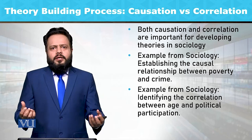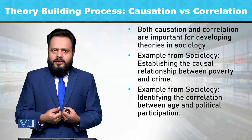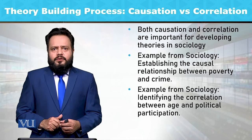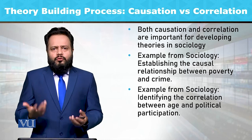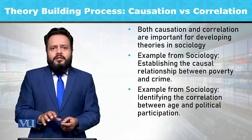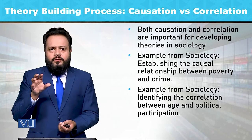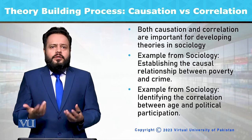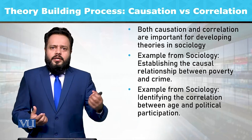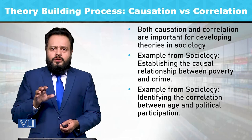اگر ہم poverty کے ساتھ direct relationship دیکھنا چاہیں تو ہمیں لگے گا کہ شاید کچھ spurious variables ہیں جو ان دونوں کے درمیان intervene کر سکتے ہیں — ہو سکتا ہے unemployment ہو، education ہو، یا geographic location ہو۔ ایک ایسے geographic area میں رہنے والے لوگ جہاں پہلے سے crime rate زیادہ ہے — گیٹو — غریب لوگوں کا علاقہ۔ اس میں ضروری نہیں کہ direct relationship establish ہو کہ ایک variable کی وجہ سے دوسرا variable cause ہو رہا ہے — بہت سے spurious variables ہوتے ہیں جنہیں research میں control کرنا ضروری ہوتا ہے۔ (If we want to see a direct relationship with poverty, there may be spurious variables intervening — such as unemployment, education, or geographic location. People living in high-crime areas (ghettos) are already poor — so a direct causal link isn't necessarily established. Many spurious variables must be controlled in research.)